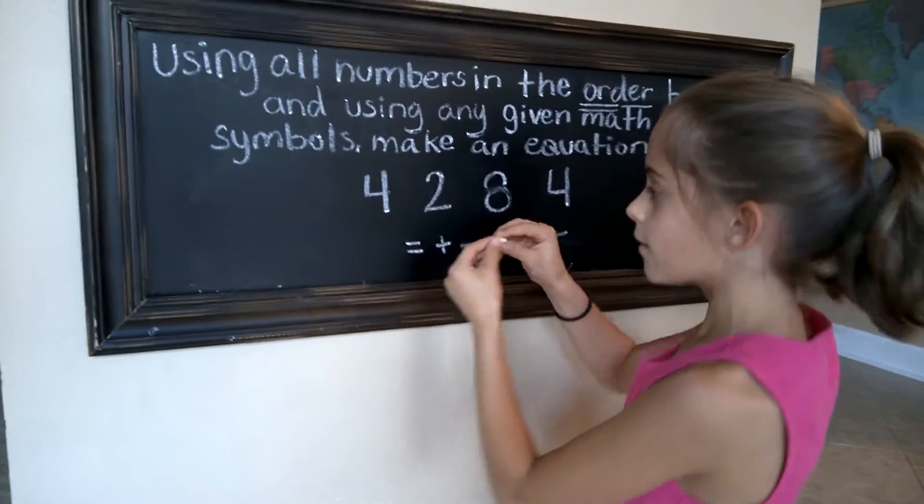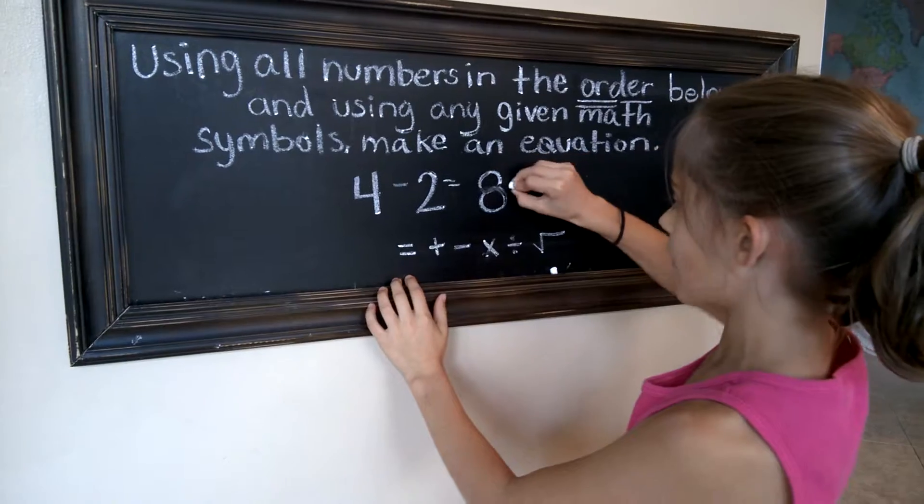I started with 4 minus 2 equals 8 divided by 4.